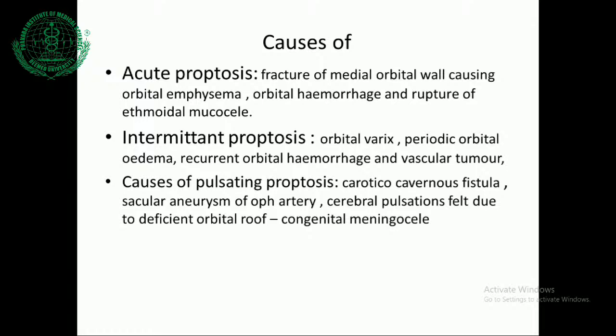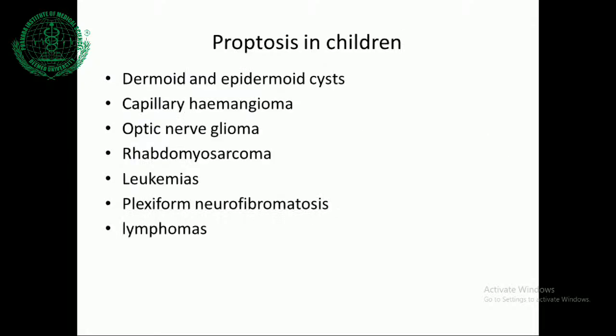Causes of acute proptosis include fracture of the medial orbital wall due to injuries such as road traffic accidents, causing orbital emphysema, orbital haemorrhage, and rupture of the ethmoidal mucocele. Intermittent proptosis is due to vascular lesions, especially orbital varices, periodic orbital oedema, recurrent orbital haemorrhage, and vascular tumours. Causes of pulsating proptosis include carotico-cavernous fistula, saccular aneurysm of the ophthalmic artery, and cerebral pulsations spreading due to deficient orbital roof. Common causes of proptosis in children are dermoid and epidermoid cysts, capillary angioma, optic nerve glioma, rhabdomyosarcoma, leukaemia, plexiform neurofibromatosis, and lymphomas.